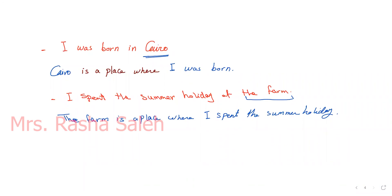'Naguib Mahfouz is a novelist.' and 'He wrote a lot of novels.' Answer: 'Naguib Mahfouz is a novelist who wrote a lot of novels.' Next: 'He is a mechanic.' and 'He repairs cars.' Answer: 'He is a mechanic who repairs cars.' Next: 'He is an athlete who has won a lot of prizes.'